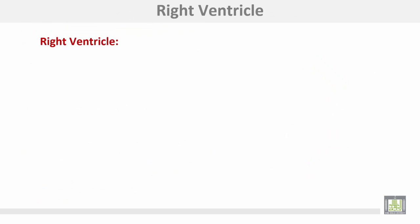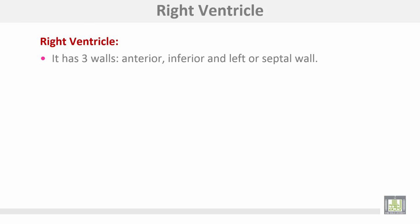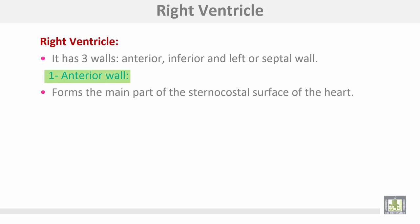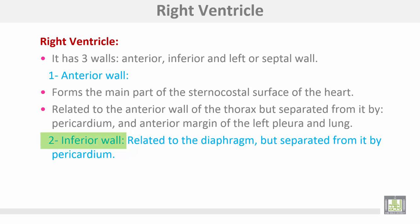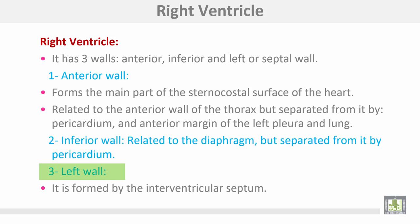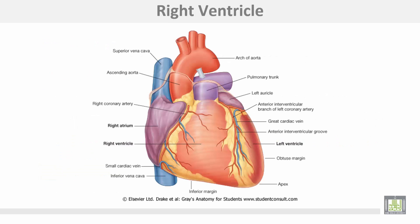The right ventricle has three walls: anterior, inferior, and the left or septal wall. The anterior wall forms the main part of the sternocostal surface of the heart and is related to the anterior wall of the thorax, but separated from it by the pericardium and the anterior margin of the left pleura and lung. The inferior wall is related to the diaphragm but separated from it by the pericardium. The left wall is formed by the interventricular septum.